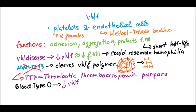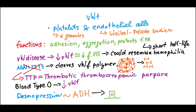The last thing to mention is the action of desmopressin, which is a drug and an analog of ADH. If you give desmopressin, it forces the endothelial cells to release von Willebrand's factor. Therefore, you can use it in von Willebrand's disease or sometimes even in mild cases of hemophilia.